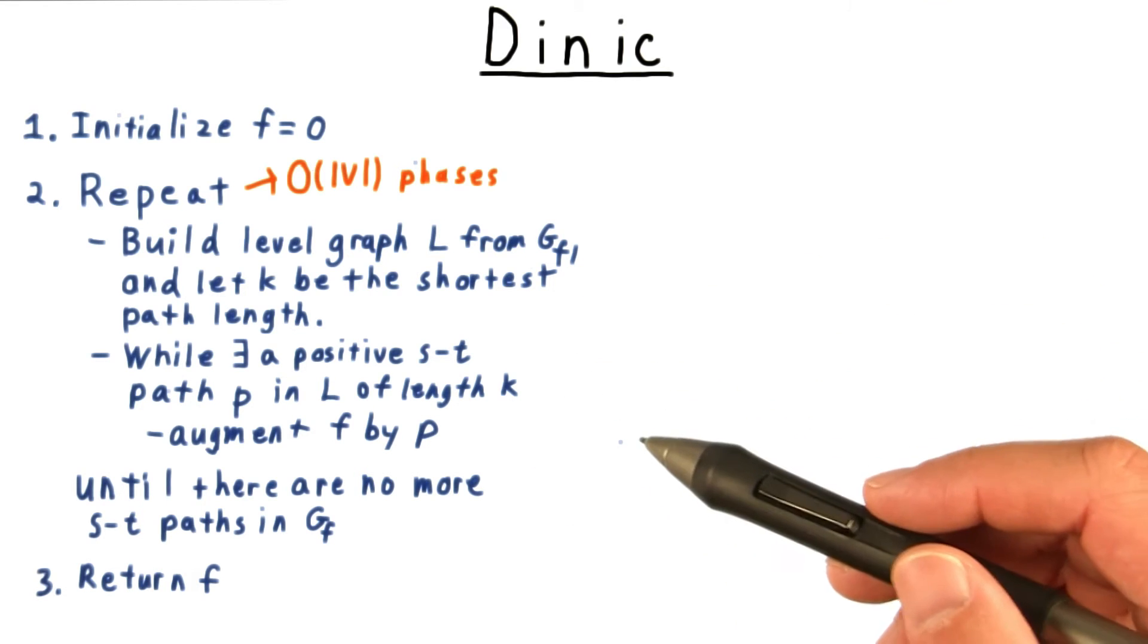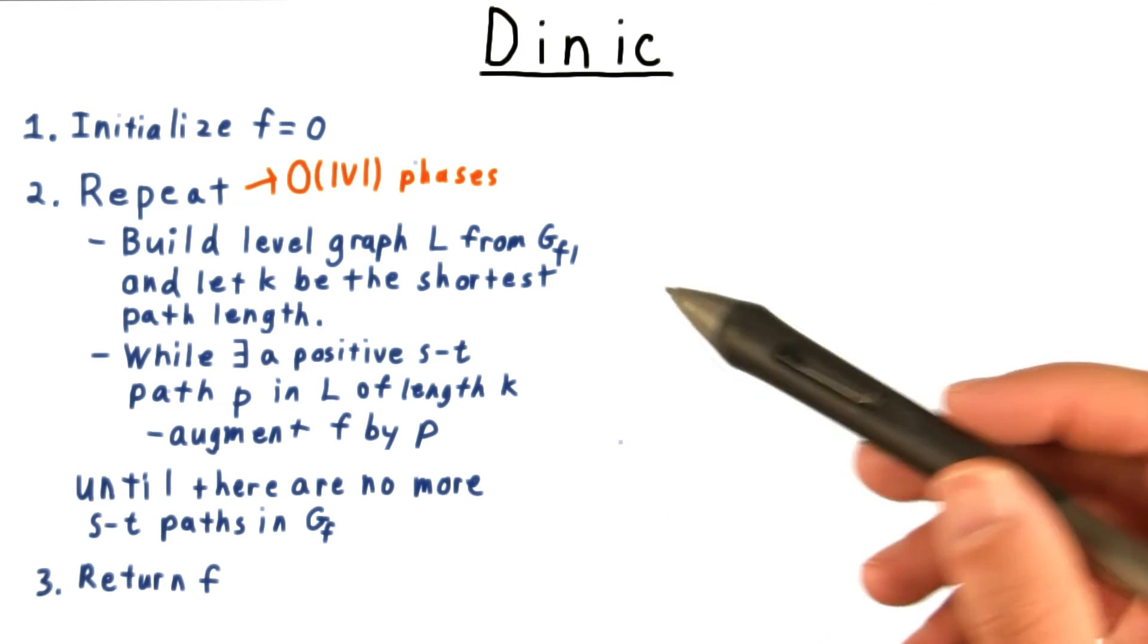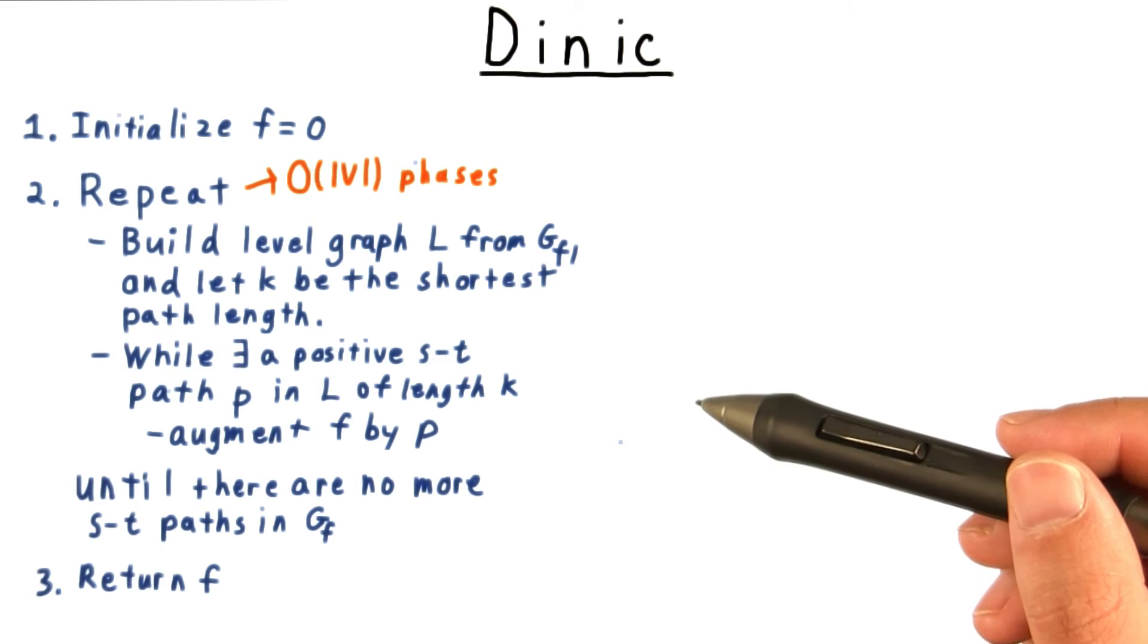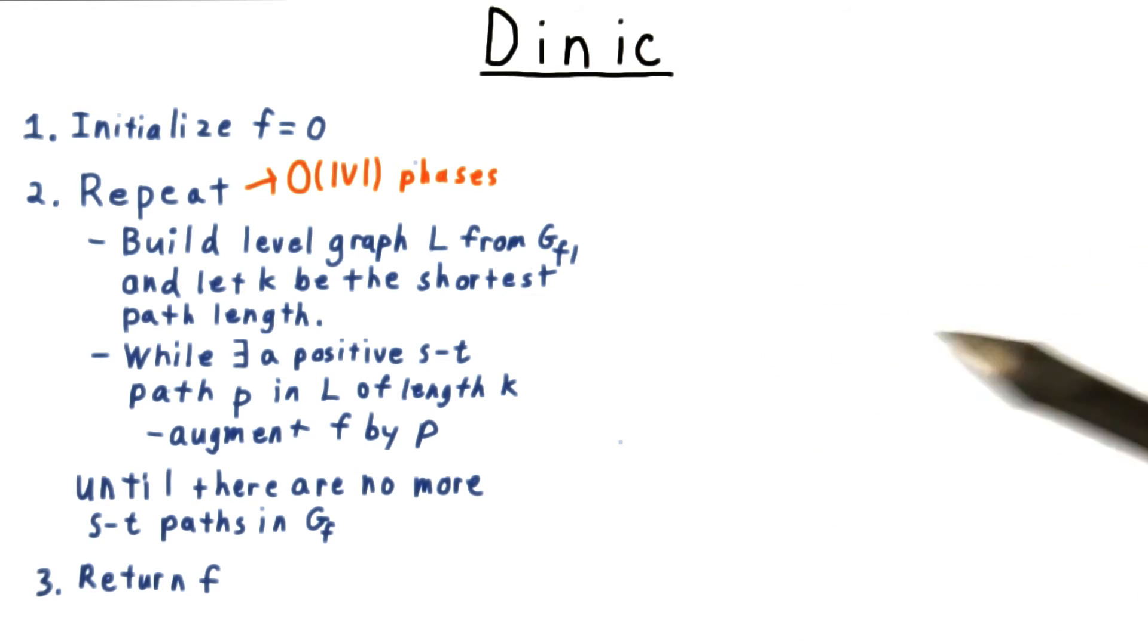And we'll be able to argue that each phase increases the length of the shortest ST path in the residual network by one. The principle here is the same as for Edmonds-Karp.